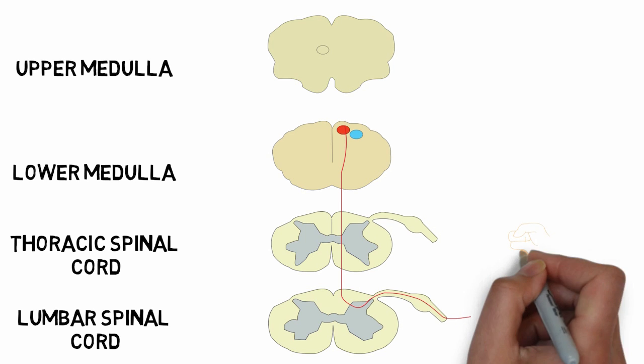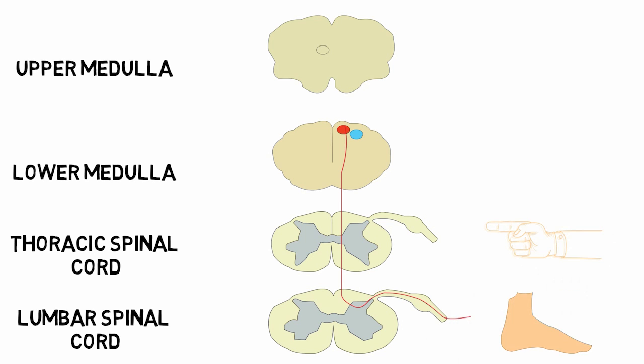In a similar fashion, the nerve fibers which bring the sensory information from the upper part of the body enter the spinal cord at the level of thoracic vertebrae and ascend up till the lower medulla. These are the first order neurons.